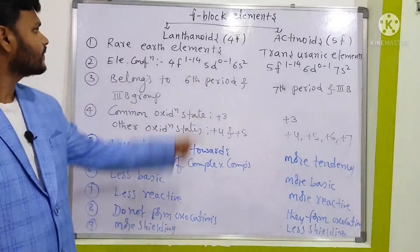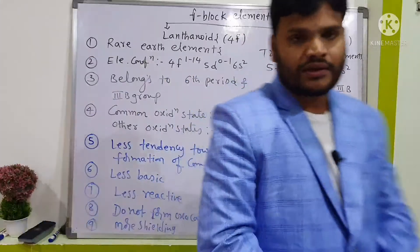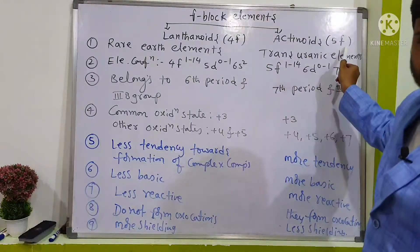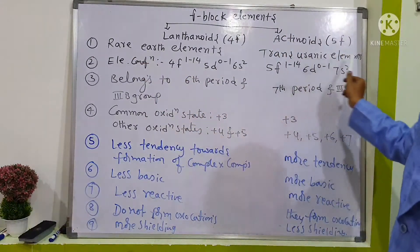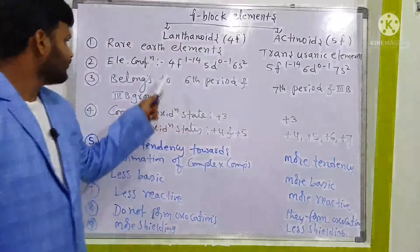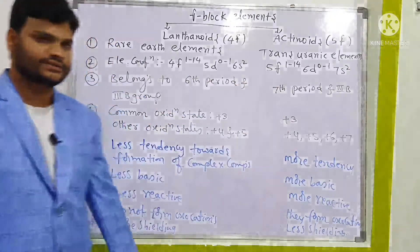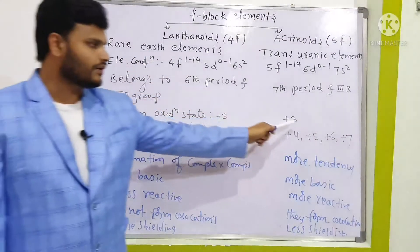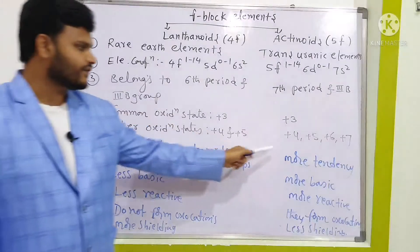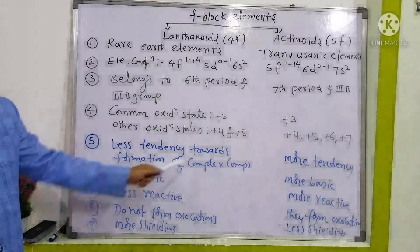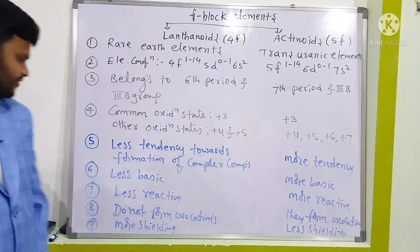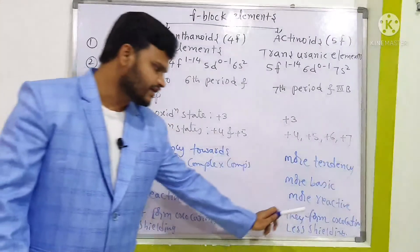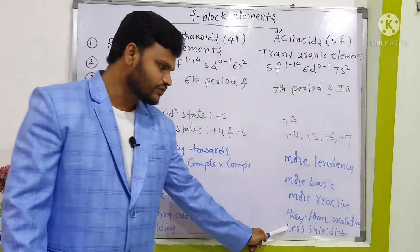These are the main differences between lanthanoids and actinoids. In summary: F block has two parts — lanthanoids (4F series) and actinoids (5F series). Common oxidation state for both is +3; lanthanoids show less shielding effect, actinoids show more shielding effect. Actinoids are more basic, more reactive, and do form oxocations.